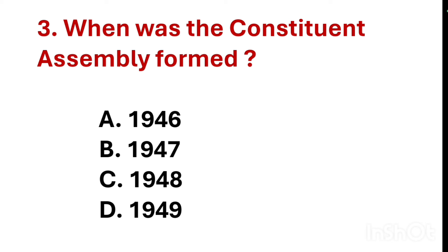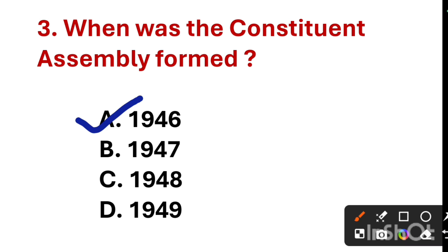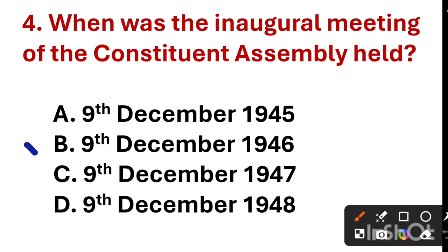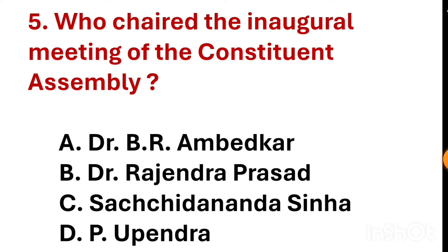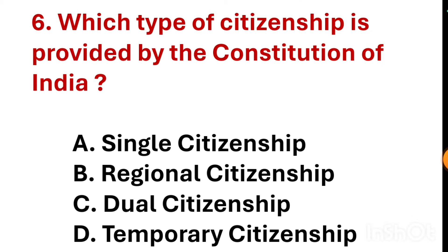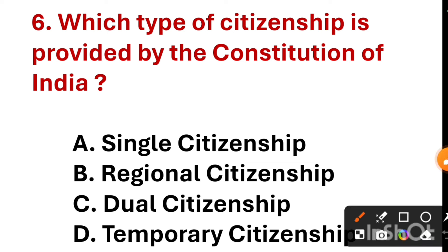When was the Constituent Assembly formed? The correct answer is option A — 1946. When was the inaugural meeting of the Constituent Assembly held? The correct answer is option B — 9 December 1946. Who chaired the inaugural meeting of the Constituent Assembly?